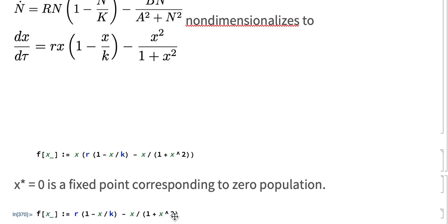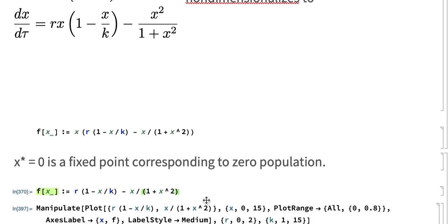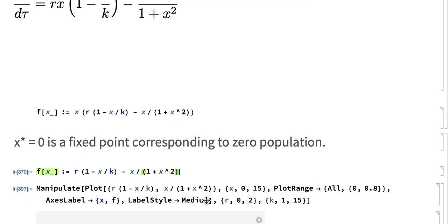And to think about zeros of this function, I'm actually just going to plot the first part of it versus the second part. So when this expression is equal to this expression, I would get fixed points. And so I'm going to plot and look for intersections to see when those zeros are.